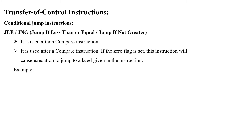Based on conditions, we have conditional jump instructions. For example, JLE or JNG — jump if less than or equal, or jump if not greater. JNG stands for jump if not greater; JLE stands for jump if less than or equal. These instructions are used after the compare instruction when comparing values between two registers or a register and a memory location.